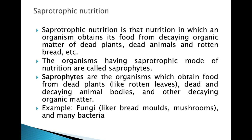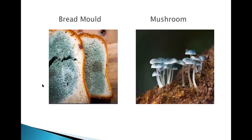Saprotrophs obtain food from dead plants like rotten leaves, dead and decaying animal bodies, and other decaying organic matter. Examples are fungi, which can be seen on bread molds, and mushrooms. You can see this type of mold when you keep bread in a moist and warm place for a longer time, and mushrooms grow on twigs around your house during moist seasons.